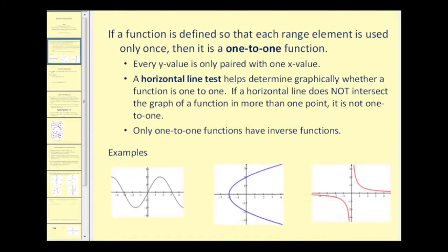We're going to start off by talking about a special type of function: a one-to-one function. If a function is defined so that each range element, or y value, is used only once, then it is a one-to-one function. If every y value is only paired with one x value, we have a special type of function called a one-to-one function.